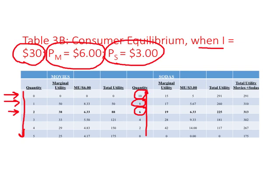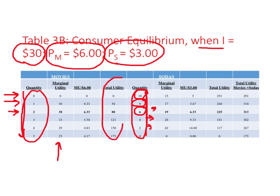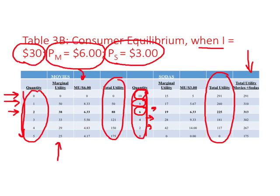From the previous table I have copied the marginal utility numbers corresponding to these quantities of movies, and done the same for sodas. I also copied total utility numbers for both, summed total utilities from movies and sodas, and then divided marginal utility by price of movies. Now the price is $6, so we get new numbers in that column.